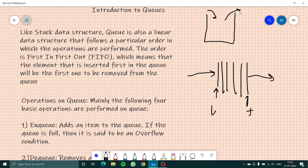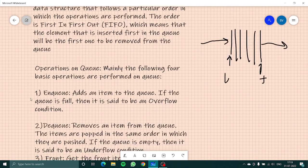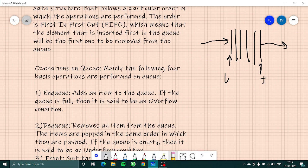Now let's look at what are the operations which we basically use on our queue. Mainly there are four basic operations. The first one is enqueue. Enqueue adds an item to the queue. If the queue is full, then it's said to be an overflow condition. Enqueue happens at the end, so this insertion in the end is called enqueue.